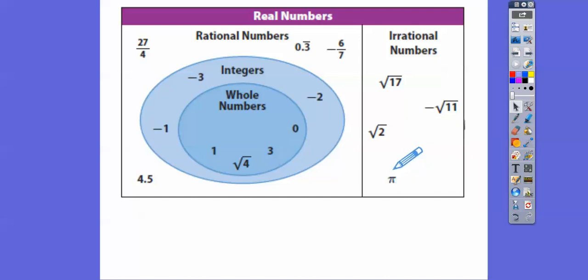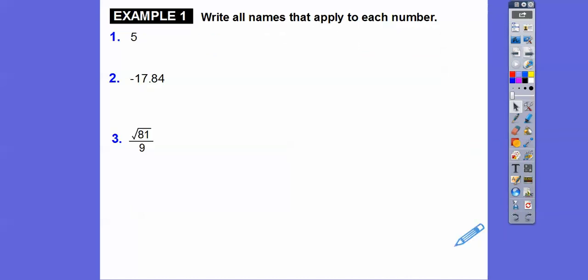Pi comes from a circle. Pi is an irrational decimal — 3.141592 and so on. That's the value of pi. And they're all real numbers.